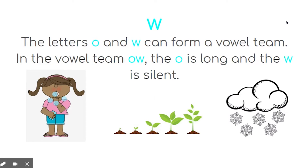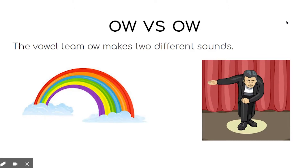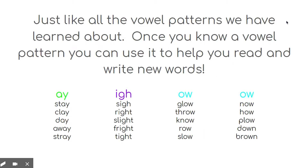The letters O and W can form a vowel team as well. In the vowel team O-W, the O is long and the W is silent. We have blow, grow, and snow. But what about cow? It has the O-W vowel team, but doesn't make the long O sound. The vowel team O-W makes two different sounds: the sound O as in rainbow, and the sound OW as in take a bow. Once you know a vowel pattern, you can use it to help you read and write new words.